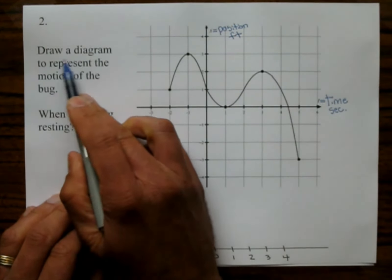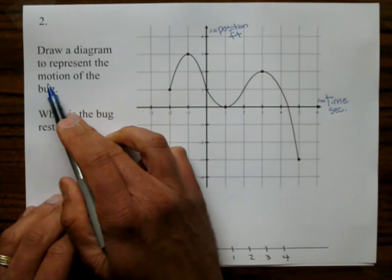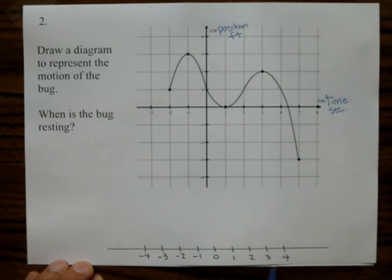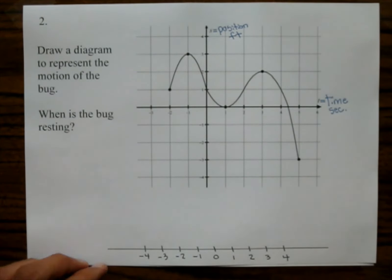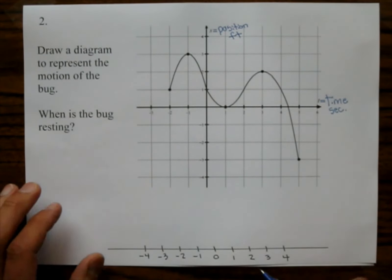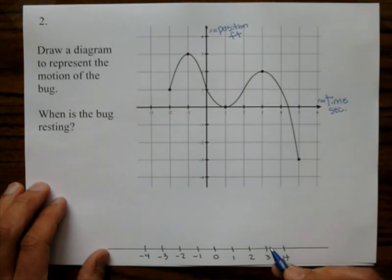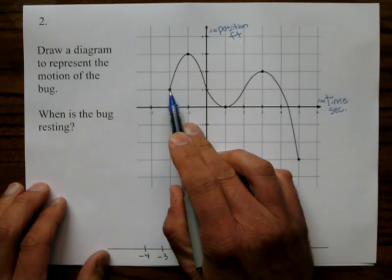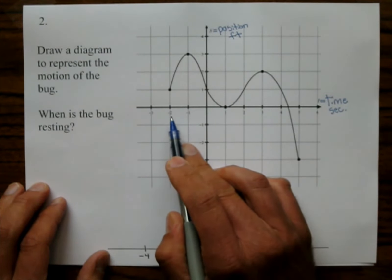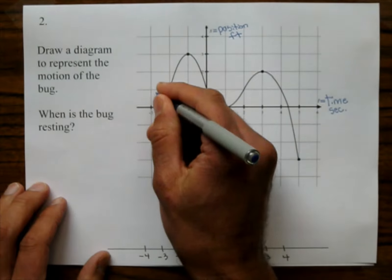So they want us to draw a diagram to represent the motion of the bug. So here's a number line right here, and the bug is going to be traveling on the number line, and somehow this graph describes what the bug is doing. There's a few approaches on this, so I'll go with the straightforward approach, and then the other approach some of you might like just as good. What does this point represent? First of all, let's label this point. This point is negative 2 comma 1.